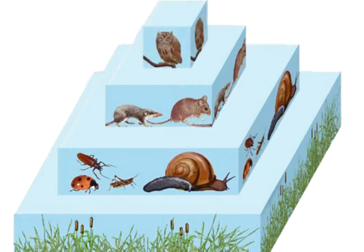This top layer of the pyramid consists of the owl population that eats the rodents and uses the energy that is stored in their bodies. That is, a portion of the energy that was available to the plants is passed along to the bugs that consume them. A portion of this is passed along to the rodents, who eat the bugs. And then, finally, a portion of the energy in the rodents is passed along to the owl.